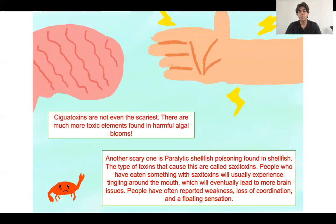Other than ciguatoxins, ciguatoxins are just one of the more reported ones. They aren't the scariest ones that you can find. There are other types of toxins. I won't go over all of them. But another one is called paralytic shellfish poisoning. And of course shellfish, they can be found in shellfish. The toxins that cause this are called saxitoxins.